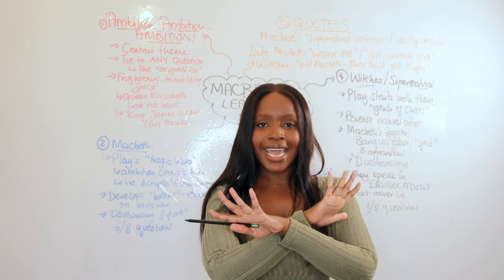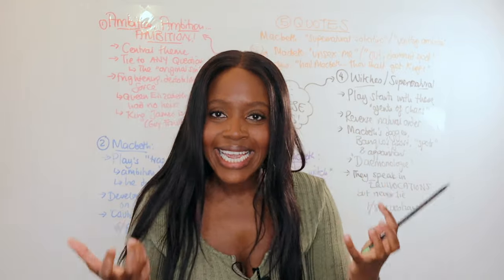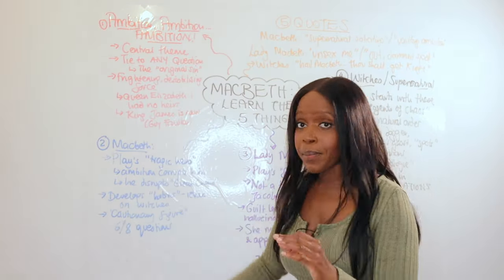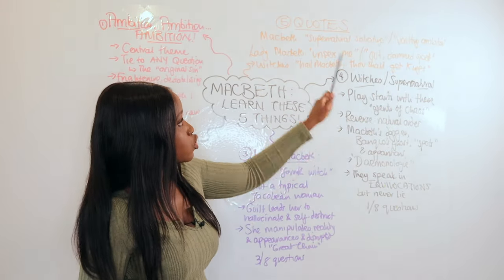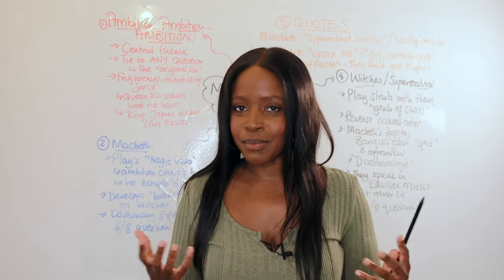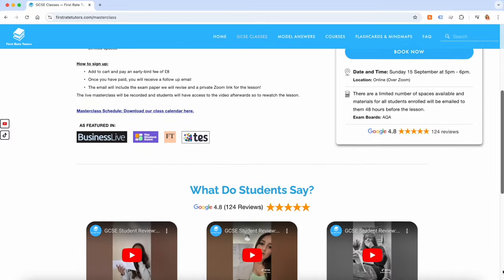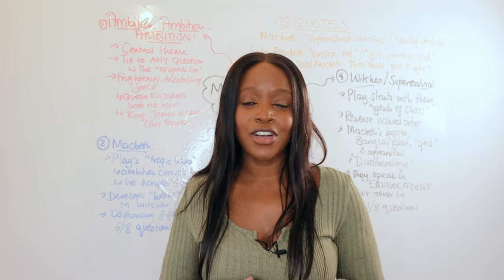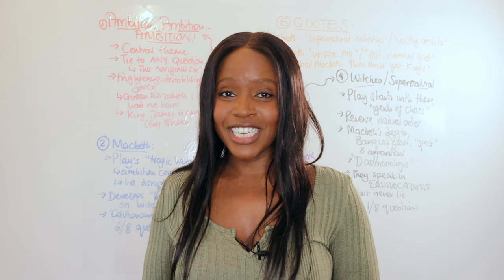So that's really it for Macbeth — the five things to know. If you forget everything, make sure you understand the central theme of ambition, the points about Macbeth's character, Lady Macbeth, the witches and the supernatural, and memorise those quotations — you'll be absolutely fine for Macbeth. Don't forget to sign up for my GCSE English language paper one and paper two masterclasses, which take place every Sunday from 5 to 6 PM, going over how to get grade seven to nine. Thank you so much for listening.